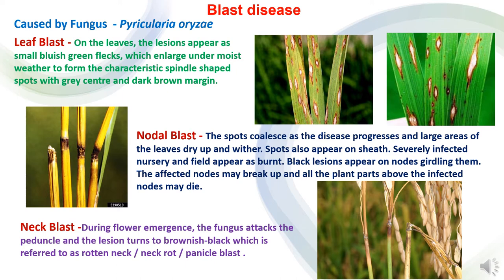First we will start with Blast disease. Rice blast is caused by the fungus Pyricularia oryzae. This blast disease is of three types: leaf blast, nodal blast, and neck blast. In case of leaf blast, the symptoms appear on leaves like bluish-green flecks. In moist weather conditions, spindle-shaped spots develop with a grey center and dark brown margins.